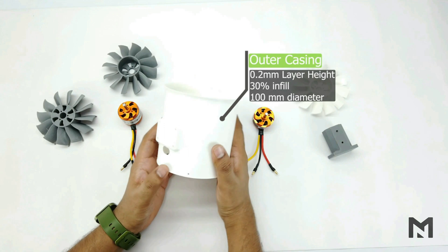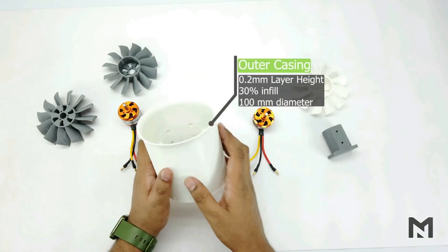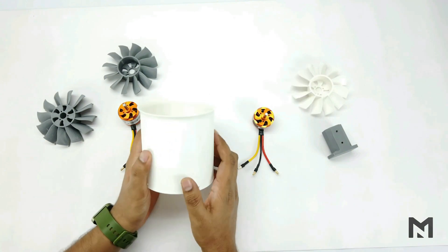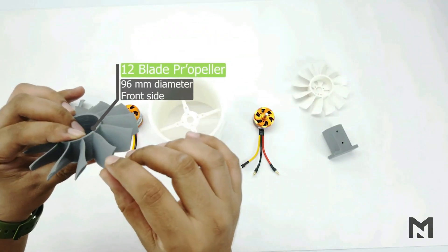All these parts are 3D printed with a layer height of 0.2mm and 30% infill. 0.2mm layer height is good for adhesion to increase its strength. Increasing the layer height reduces the time but it will not have much strength.